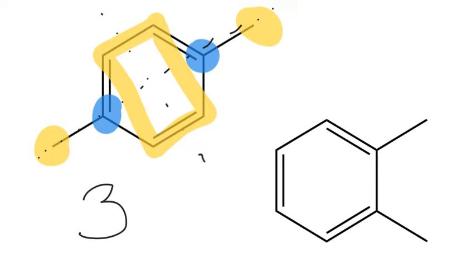For the molecule on the right, the 1,2-dimethylbenzene, because of a mirror line in almost the exact same way as the other one, you're going to get one peak for your CH3s. Just like before we would get one peak for those — there's still a line of symmetry on our molecule.